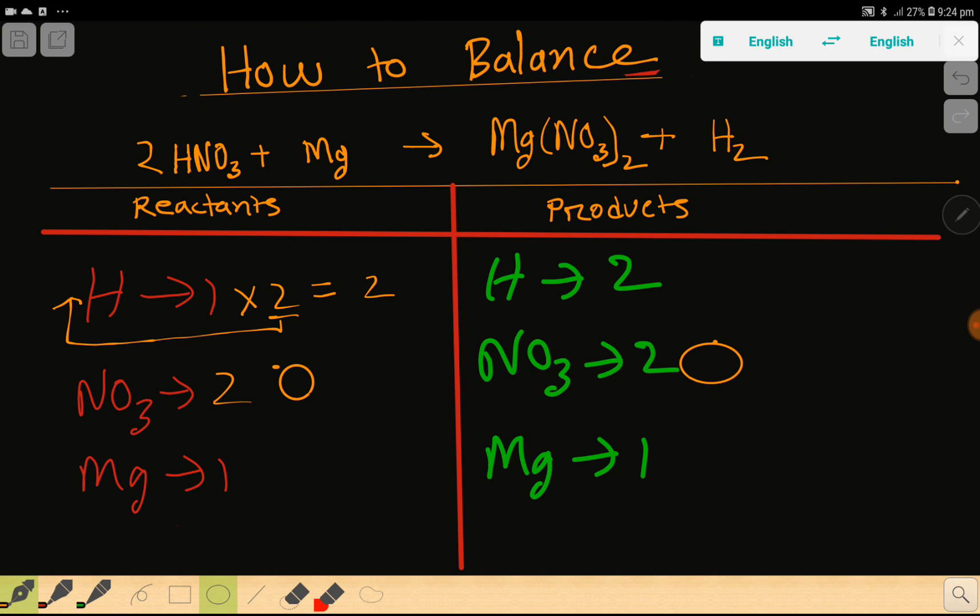Then magnesium here is one and here also one, so everything is balanced. So you can say that this is the balanced reaction. And for a balanced chemical equation, you can change the arrow sign to equal sign. Thank you for viewing this video.